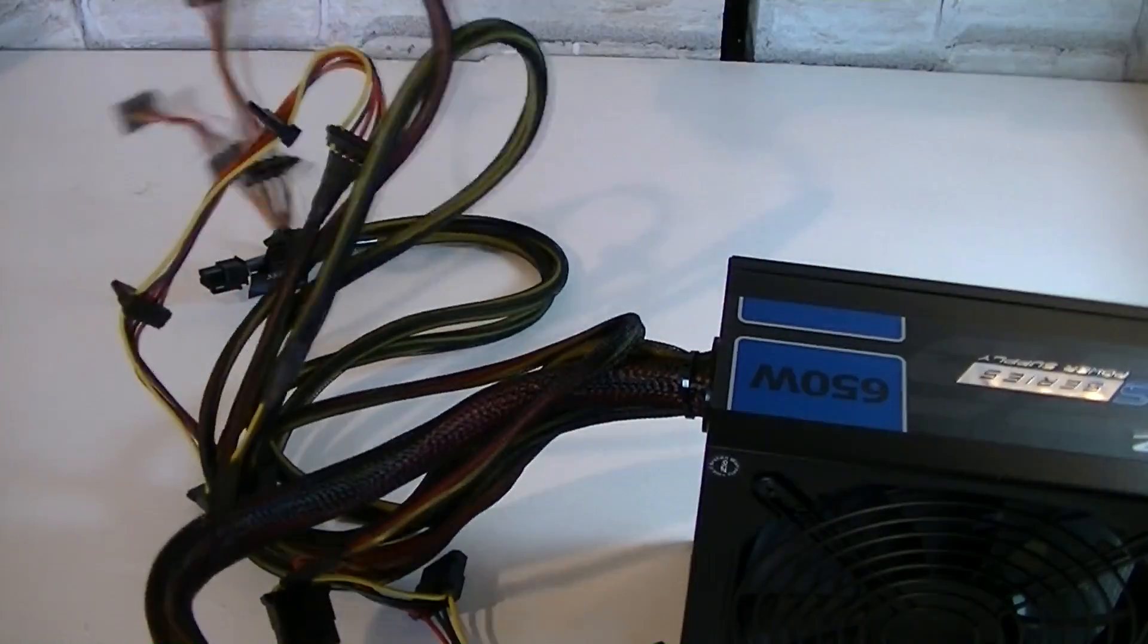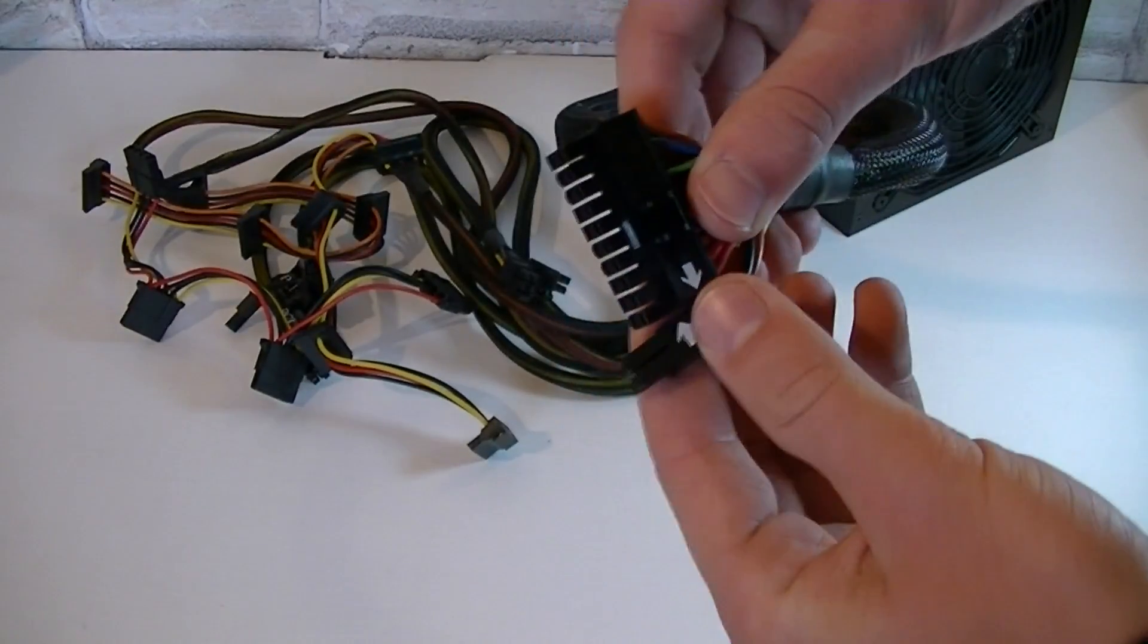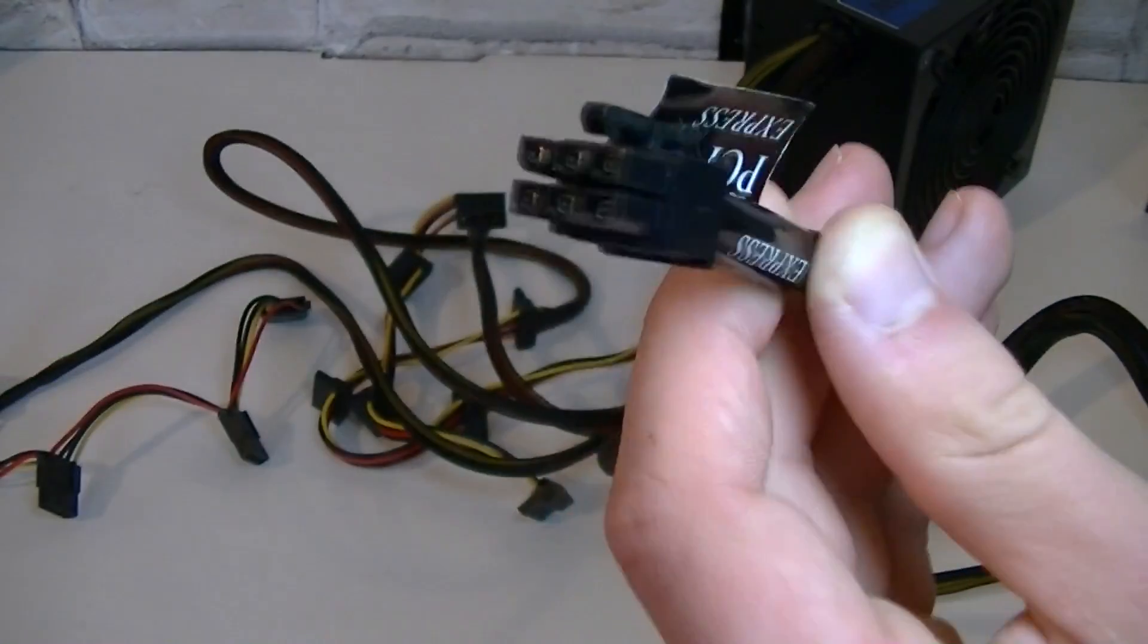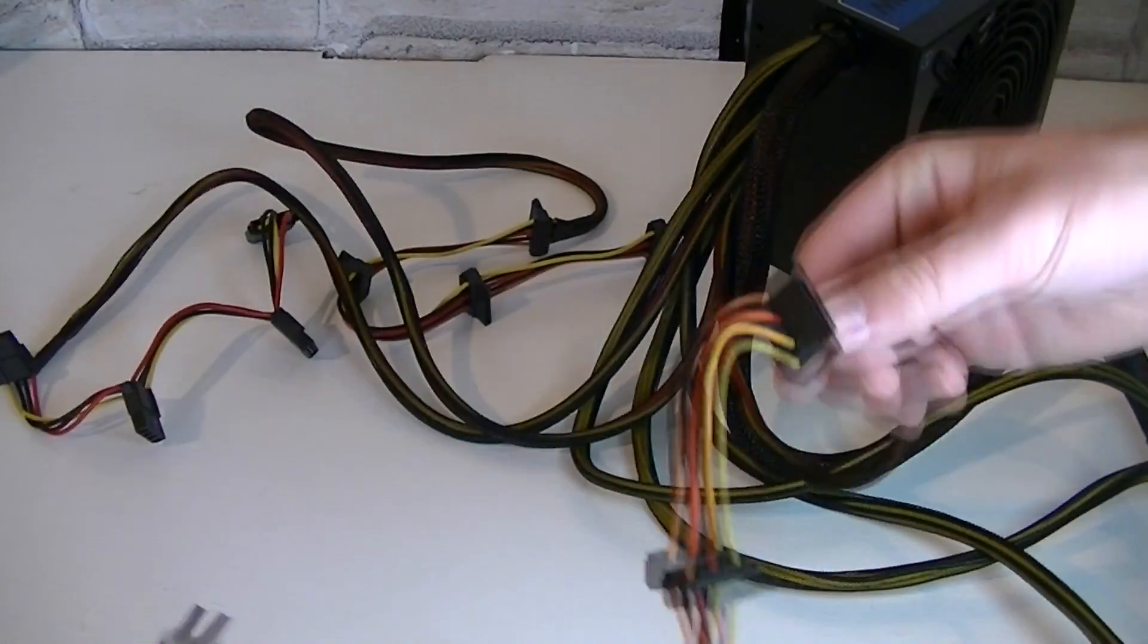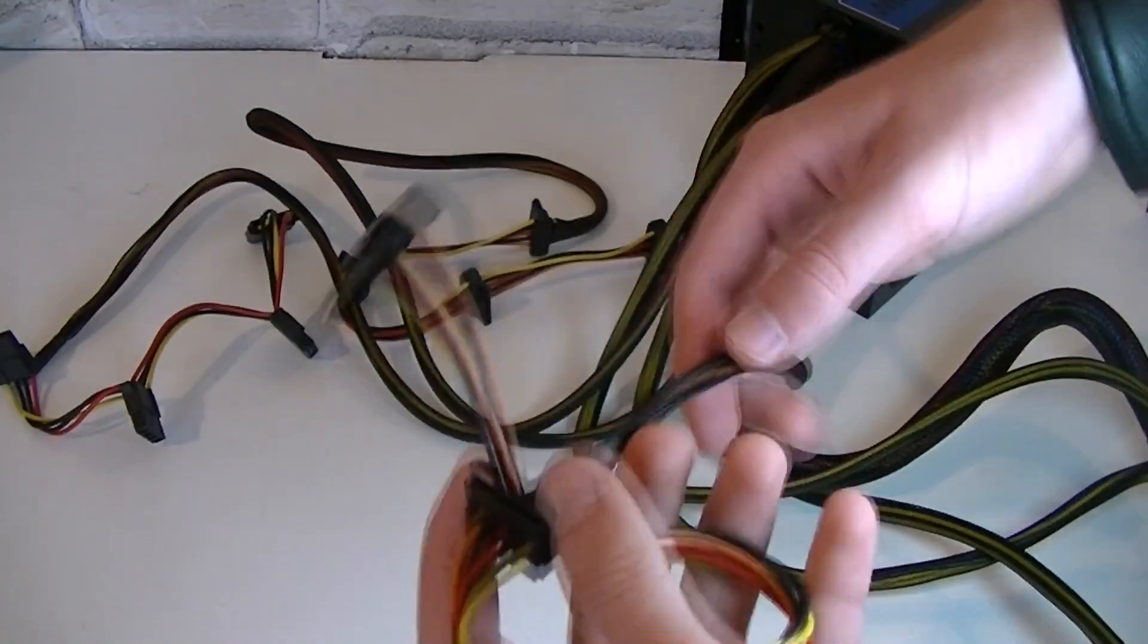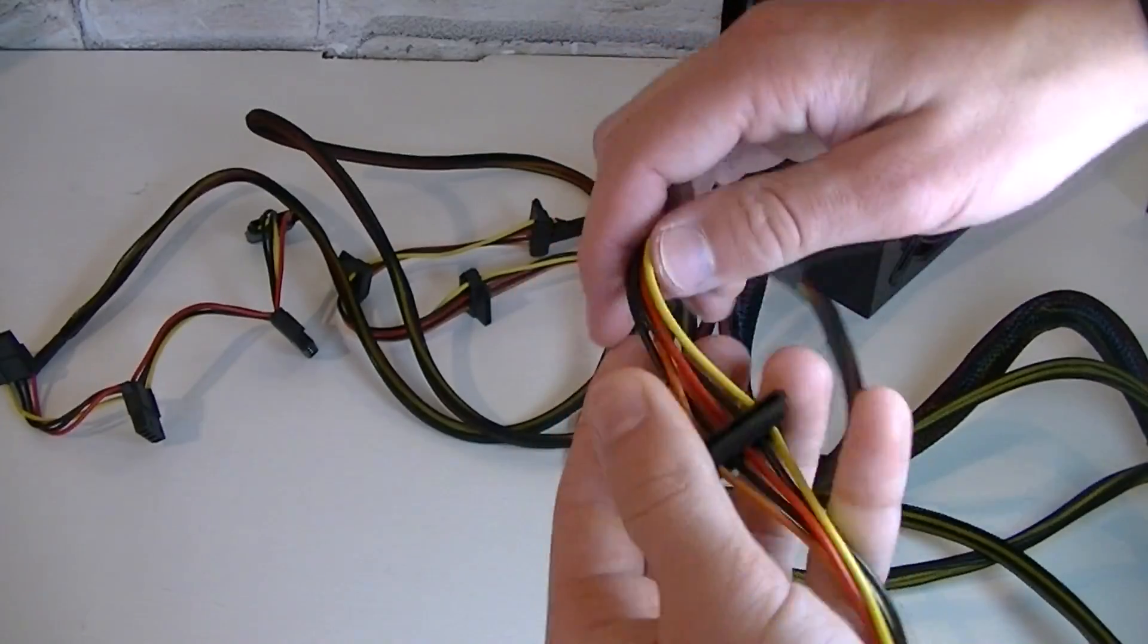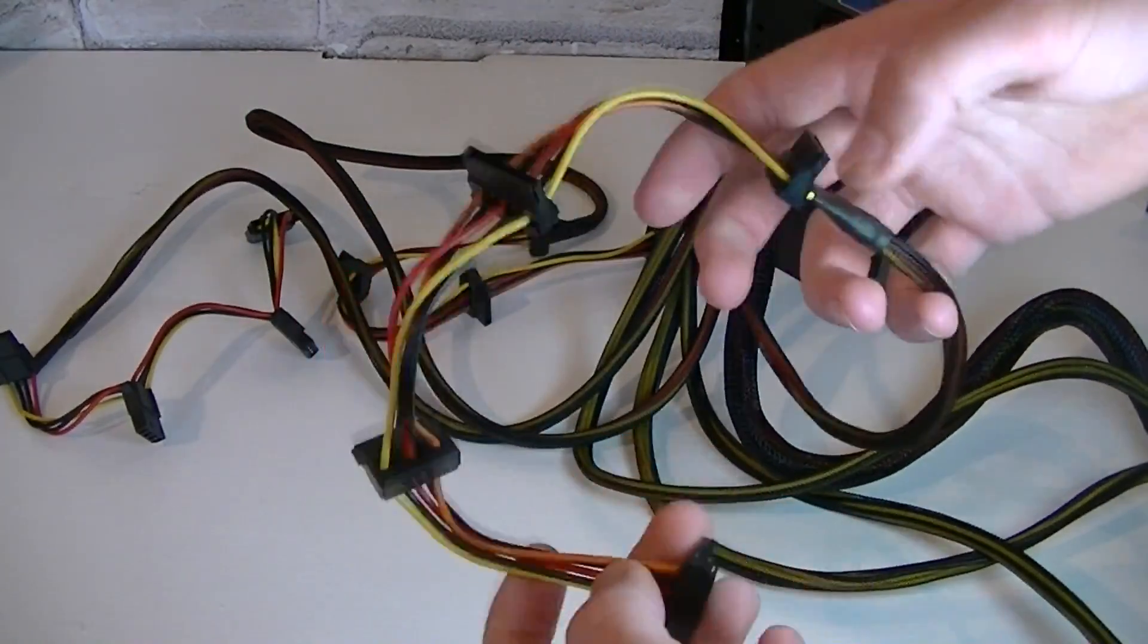It offers a decent amount of connectors. Right here for example is the 20 plus 4 pin power connector, the 4 plus 4 pin ATX 12 volt power connector, the 6 pin PCI Express connector, the 6 plus 2 pin PCIe connector, and four SATA connectors. One thing I noticed here is that the cables are nicely braided down here but aren't anymore up there. In terms of performance there's of course no difference but beauty is another thing. So this really bothered me a bit.